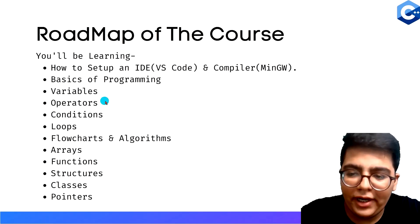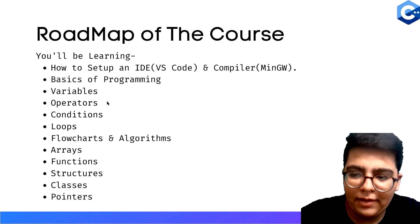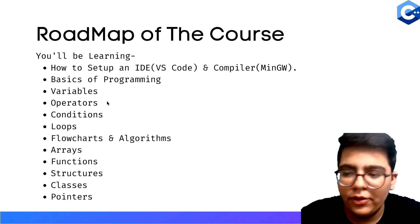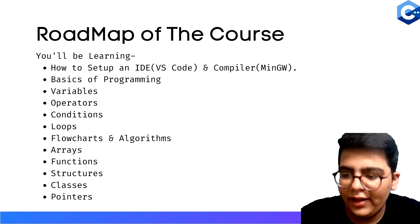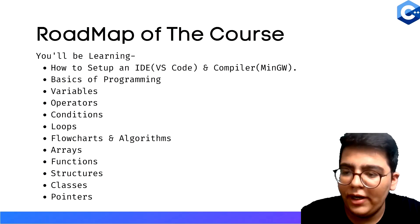Then we have operators, which is the main usage of variables. We have unary, binary, and ternary — we've covered all types of operators.